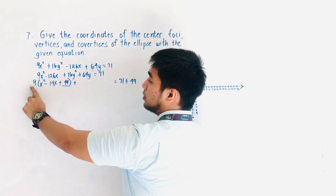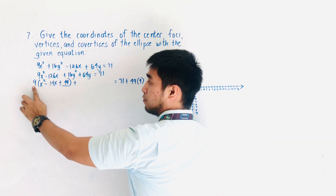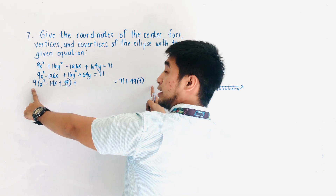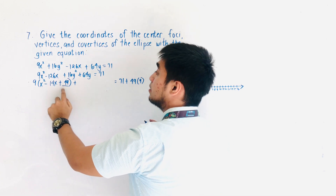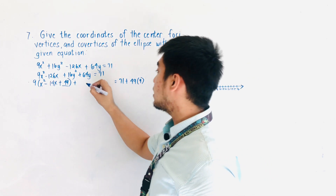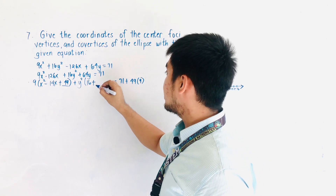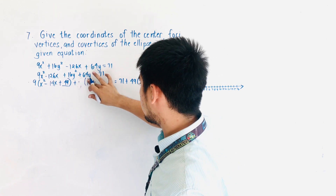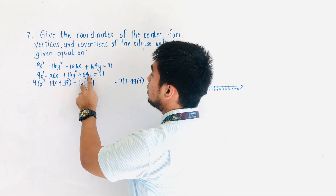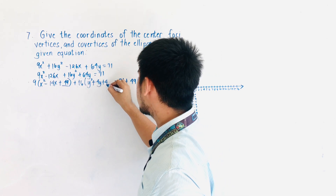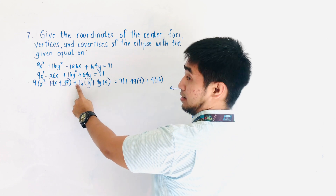We're not yet done because we factored out 9, so we need to multiply 49 by 9 on the right side. Do not forget: if you factor out the coefficient of x², you need to multiply that constant to the value you added inside. So 49 × 9 goes to the right side. Then for y, we factor out 16: y² + 4y (since 64 ÷ 16 = 4). Complete the square: 4 ÷ 2 = 2, 2² = 4. We add 4 × 16 to the right side.